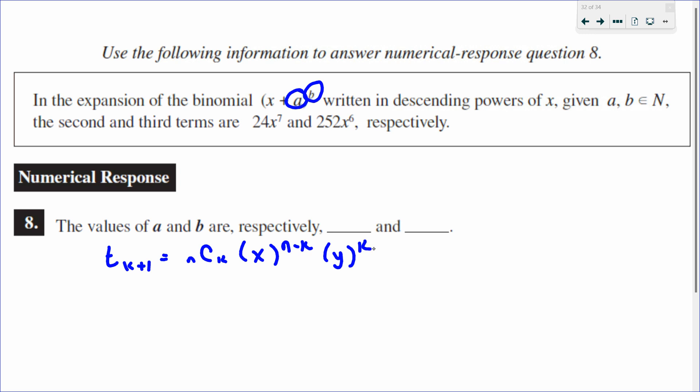Let's fill in what we know. We're dealing with our second term, so that means k must be 1. Our second term, 24x^7, is nCk, which we now know is 1. The first term to the n minus k, which is 1. Second term to the k.